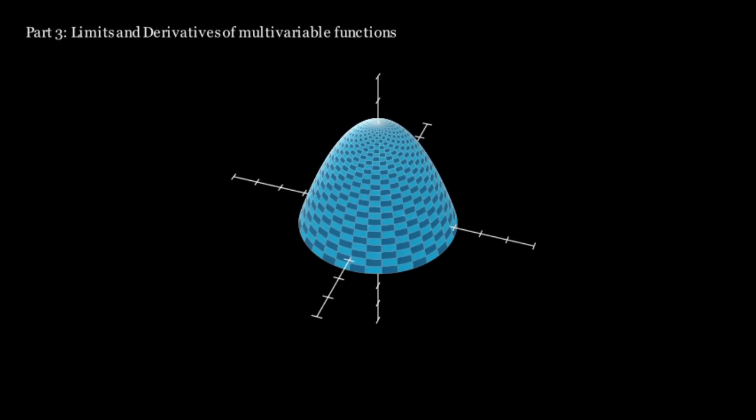Part 3: Limits and derivatives of multivariable functions. Just like with 2D functions, where we approach an x value, we can take the limit of a 3D function, where we approach a value on the xy plane. Using these limits, we can also define a derivative, just like one would in 2D. One thing to note is that there are infinitely many derivatives of a 3D function at a certain point, since there are infinitely many directions one can go in. Each of these are called directional derivatives.